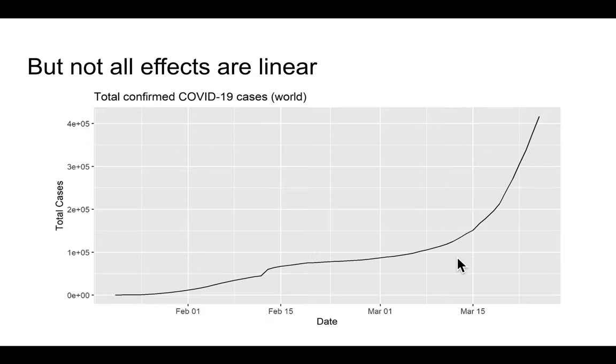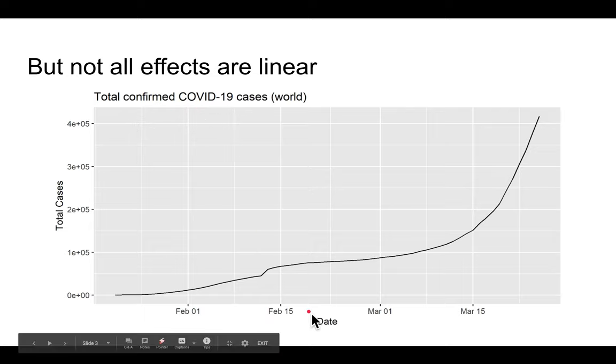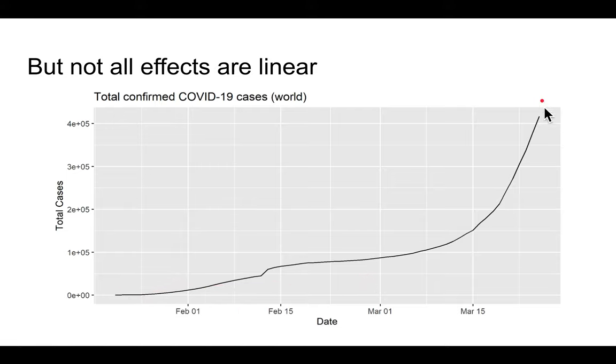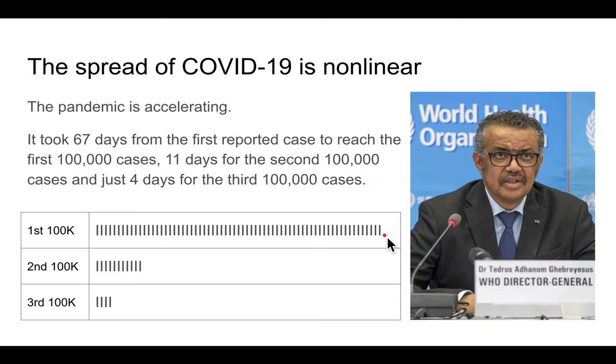For example, in this graph of the total confirmed COVID-19 cases by day, you can see that the curve is definitely not linear. In fact, the number of COVID-19 cases are growing exponentially.